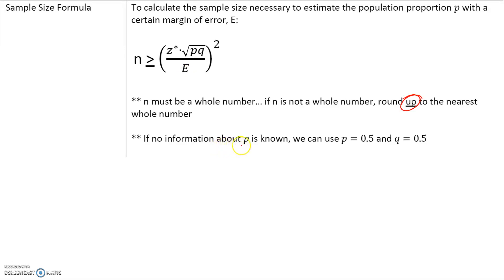If no information about P is given, then we use P equals 0.5 and Q equals 0.5 as estimators. This will happen more often than not, since we wouldn't know the population proportion if that's what we're trying to find. So we use P equals 0.5 and Q equals 0.5 as estimates.